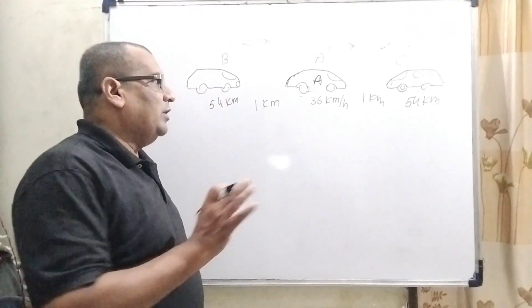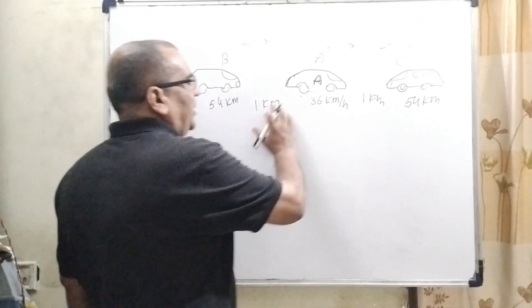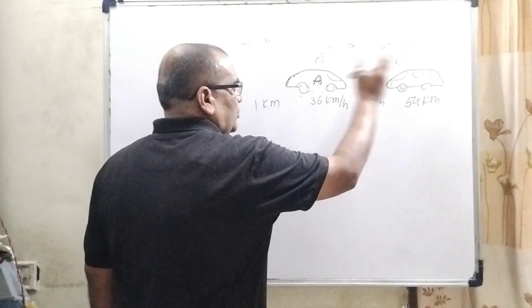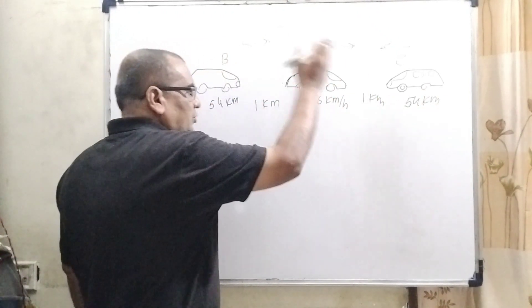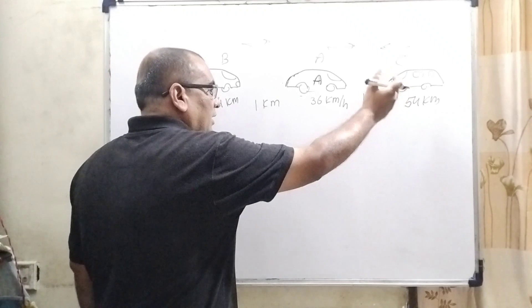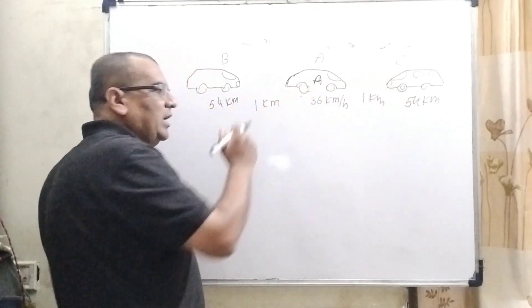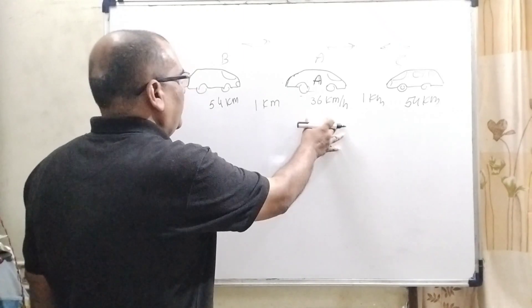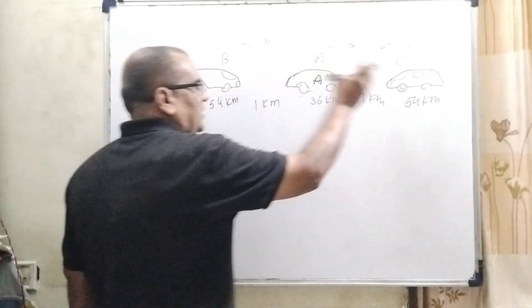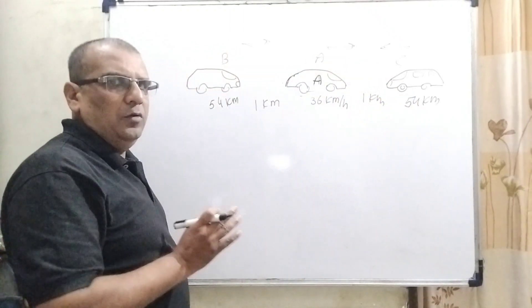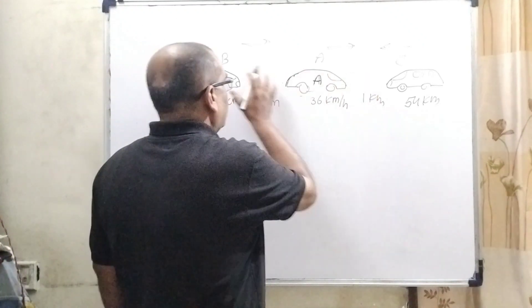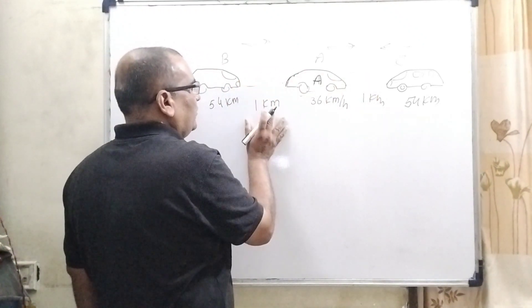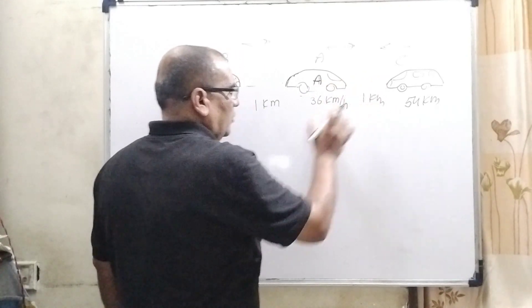Let us first understand what the question says. Here, we have given three cars. A is moving towards the right side. B is also moving towards the right side. And C is the only car moving towards the left side. Here, the speed of A car is 36 km per hour. Speed of B and C cars are the same, that is 54 km per hour. And the distance AB is 1 km and AC is 1 km.